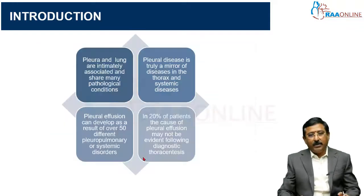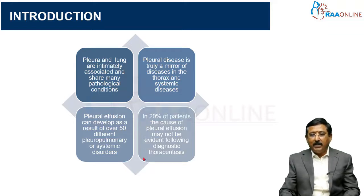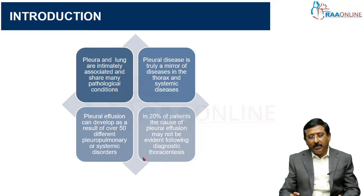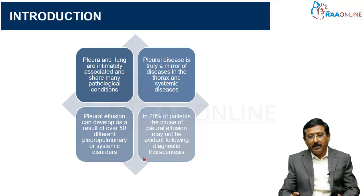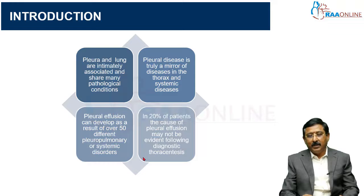Coming to my first introduction slide: the pleura and the lung are intimately associated and share many pathological conditions. Pleural disease is a mirror image of systemic disease. For example, rheumatoid arthritis or SLE can present with a pleural effusion, as can pulmonary embolism.